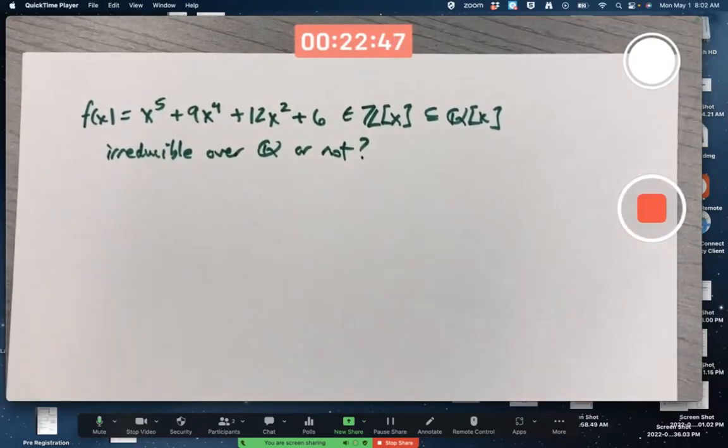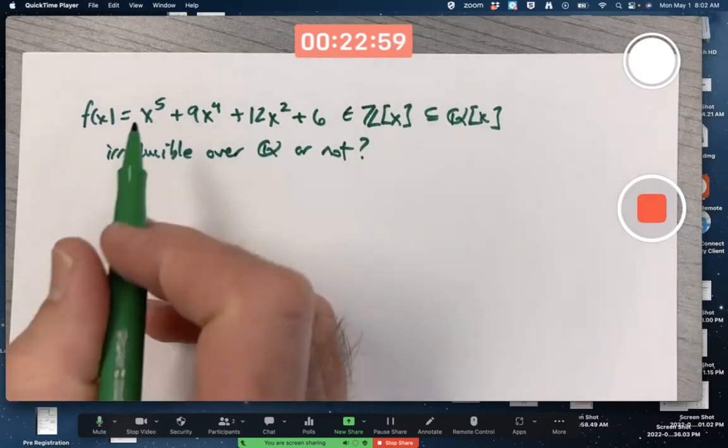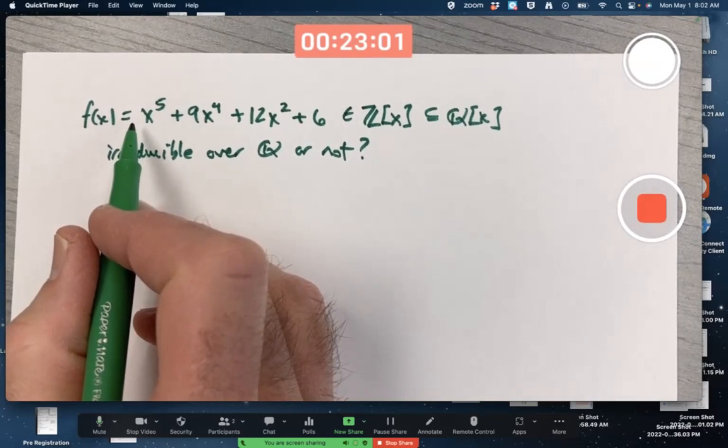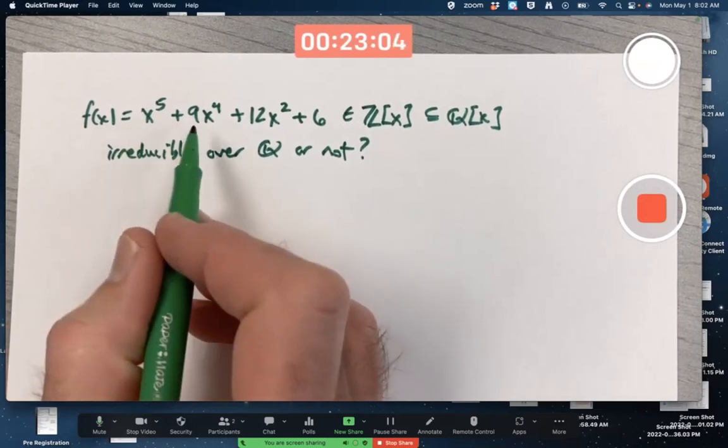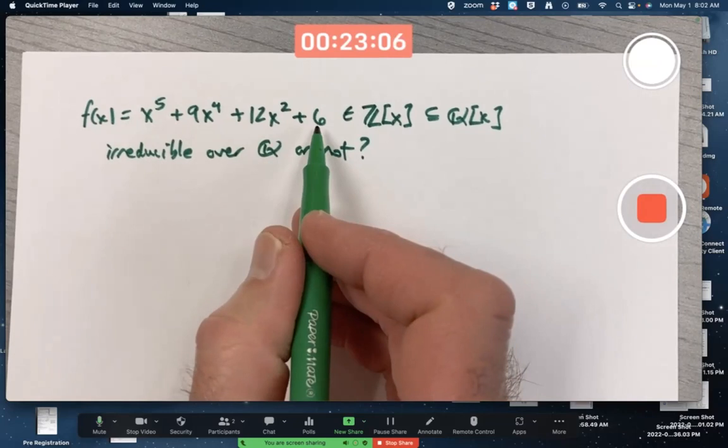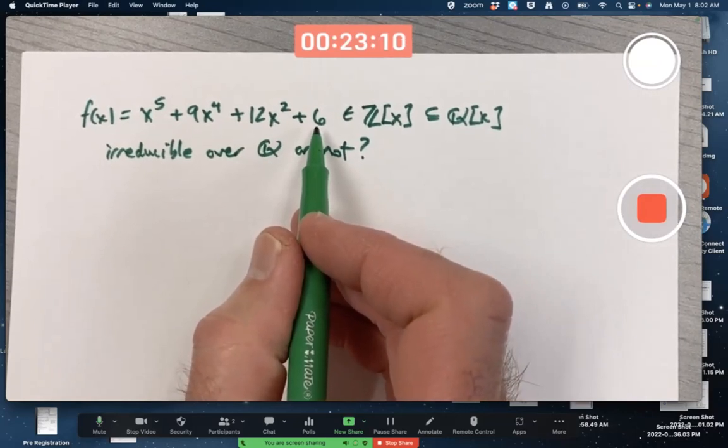And what you're almost always hoping for in a problem that looks this hard is that you can use Eisenstein's criterion, and then it's easy. So what you're looking for is whether there's a prime p that does not divide the highest degree coefficient, 1 in this case. It does divide all the other coefficients, but its square does not divide the constant term.